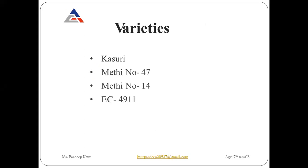Next are the varieties. The first variety of fenugreek is Kasuri. The second is Methi No. 47, the third is Methi No. 14, and the last one is EC 491. These are the different varieties of fenugreek.